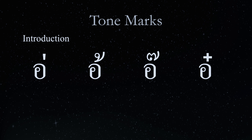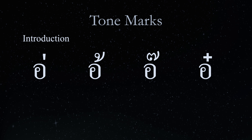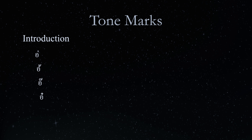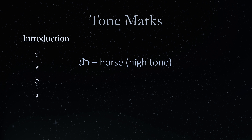All tone marks are written at the top right corner of the initial consonant. You can think of the consonant O-ANG here as a placeholder for the initial consonant. For example, MAI meaning horse has the tone mark MAI TO, written at the top right corner of the initial consonant MAI MAI. MAI is in the high tone.